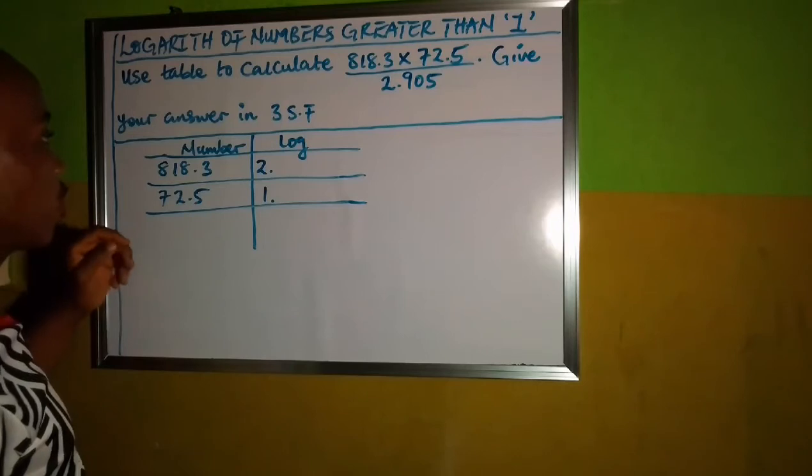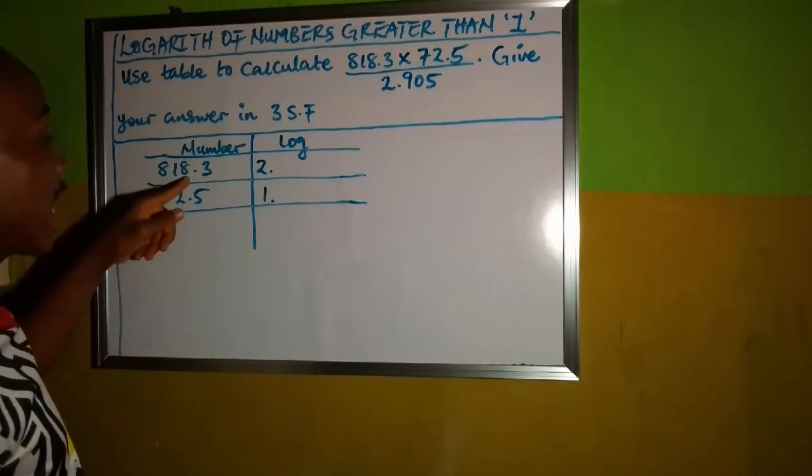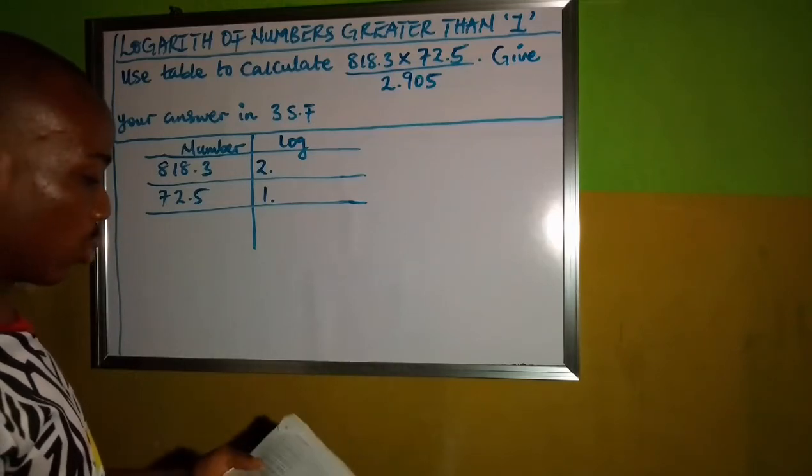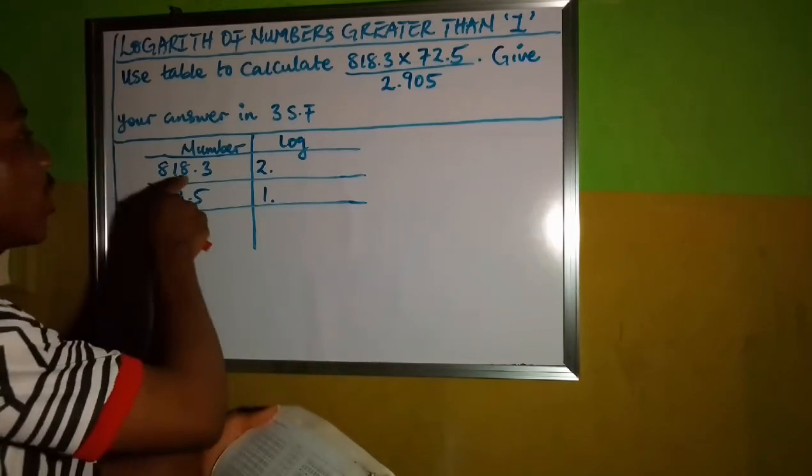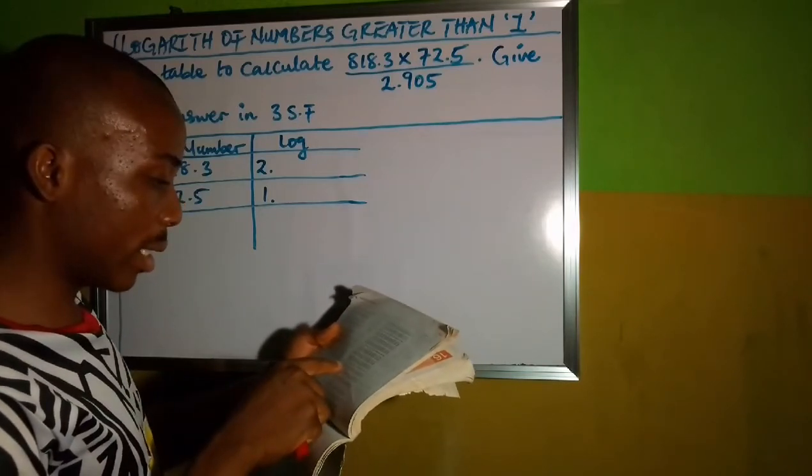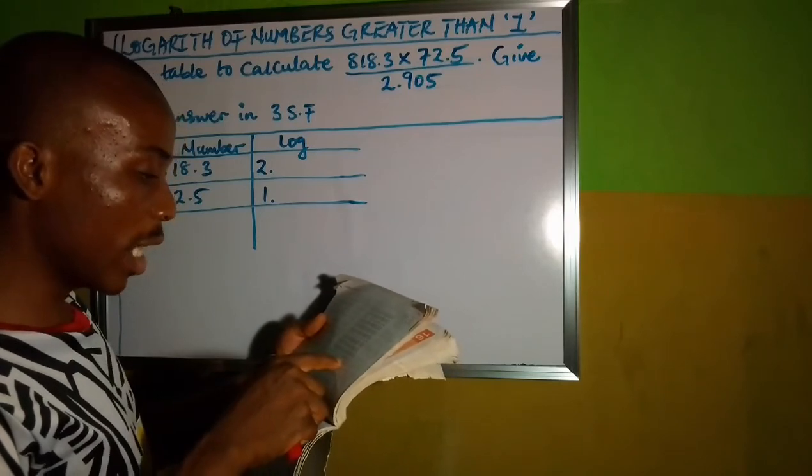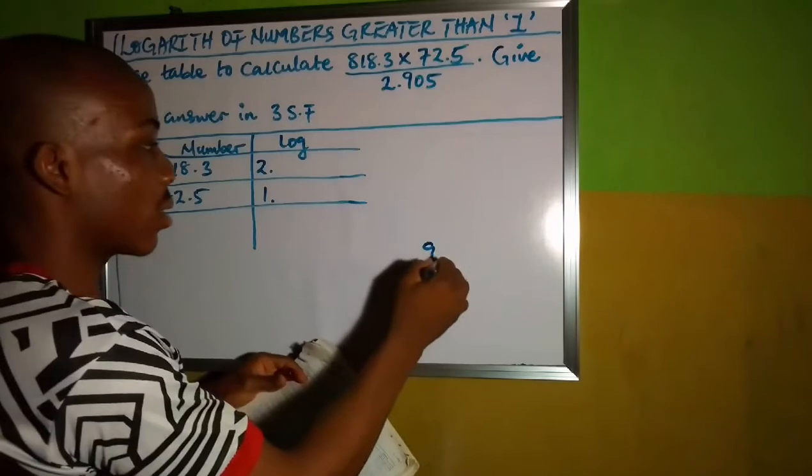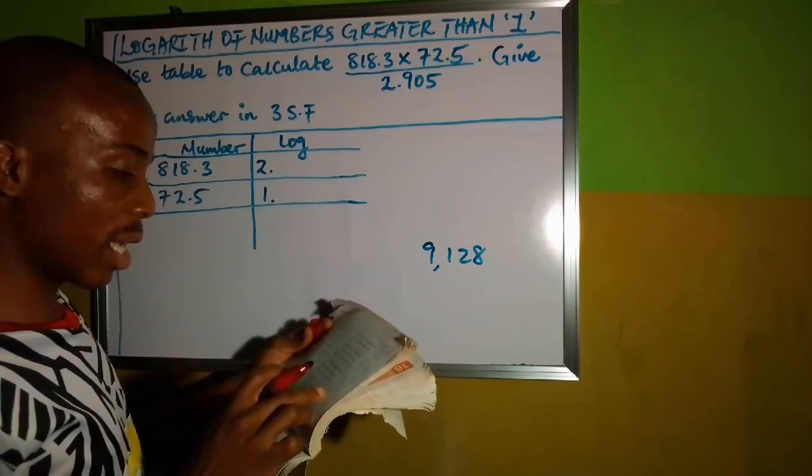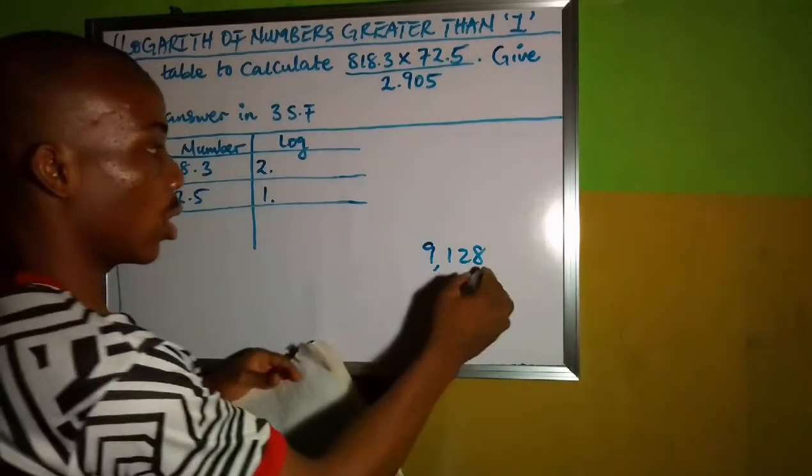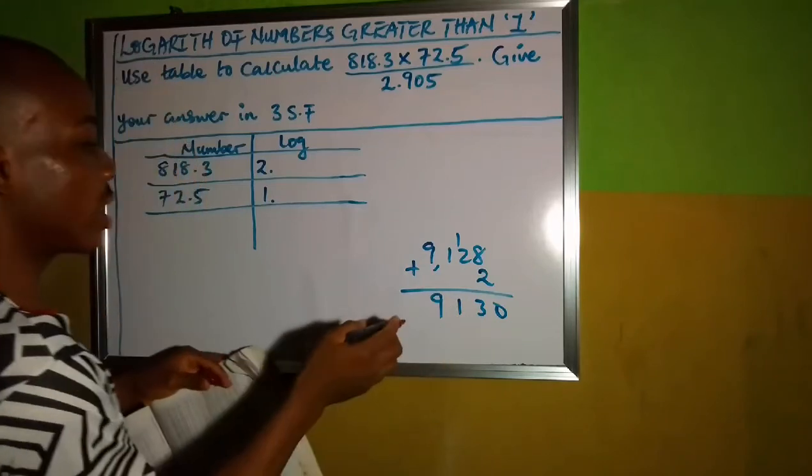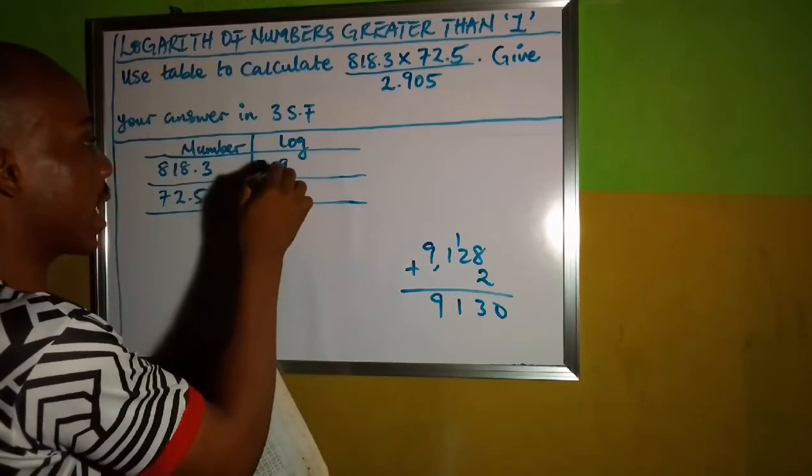The next thing I will do now is that I am going to check 81 under 8 and difference of 3. You go to your math test group, to the log reading of numbers. Then you check 81 under 8 and difference of 3. 81 under 8 is 9,128. And difference of 3 gives us 2. So you are going to add the difference. 8 plus 2 is 10, carry 1. 1 plus 2 is 3, 1 and 9. So this gives us 9,130.